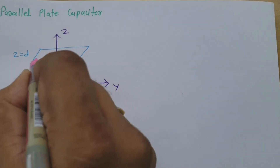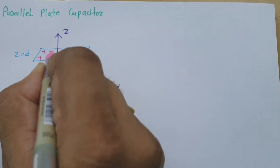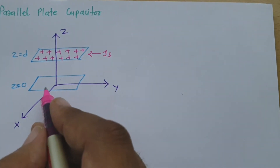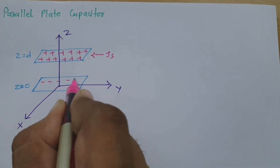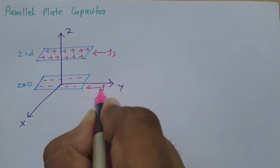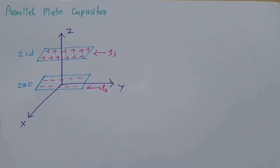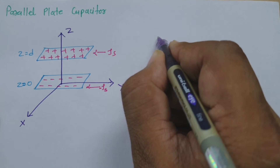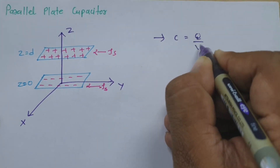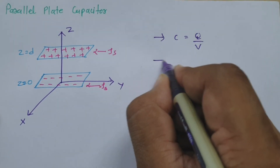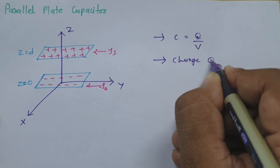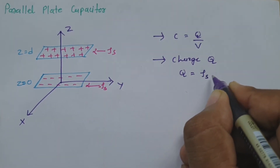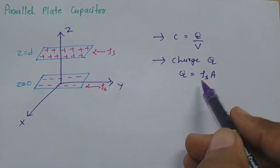We are dealing with calculating capacitance due to these two parallel plates. If I say there is positive charge on the upper plate, and if the surface charge density is rho s, then obviously on the lower plate there will be negative charge, and the surface charge density there will be minus rho s. So, the charge Q equals surface charge density times the area of the surface, that is rho s into A.